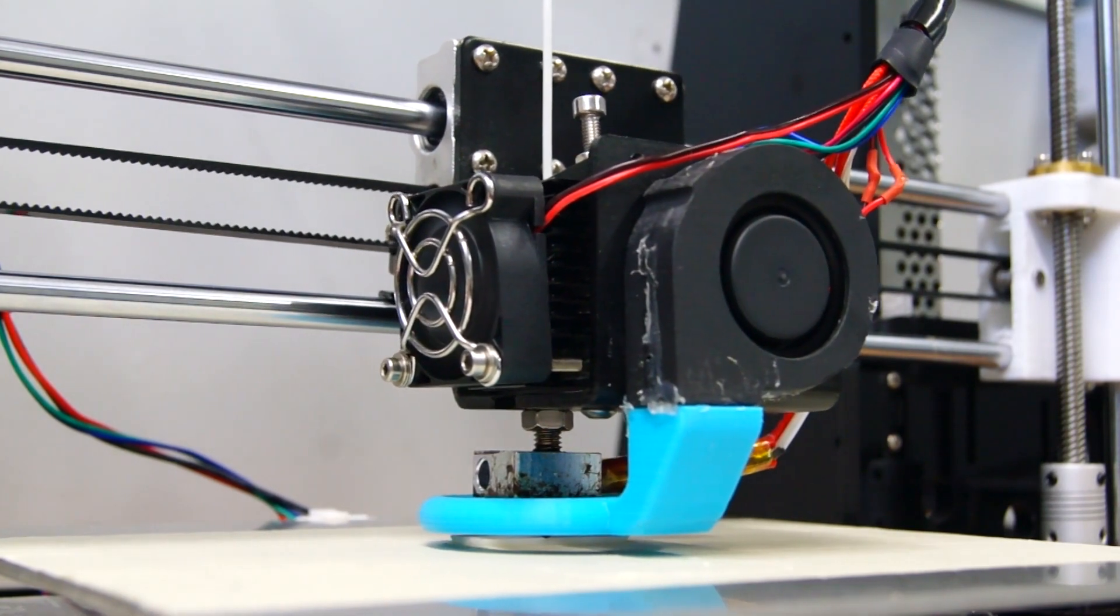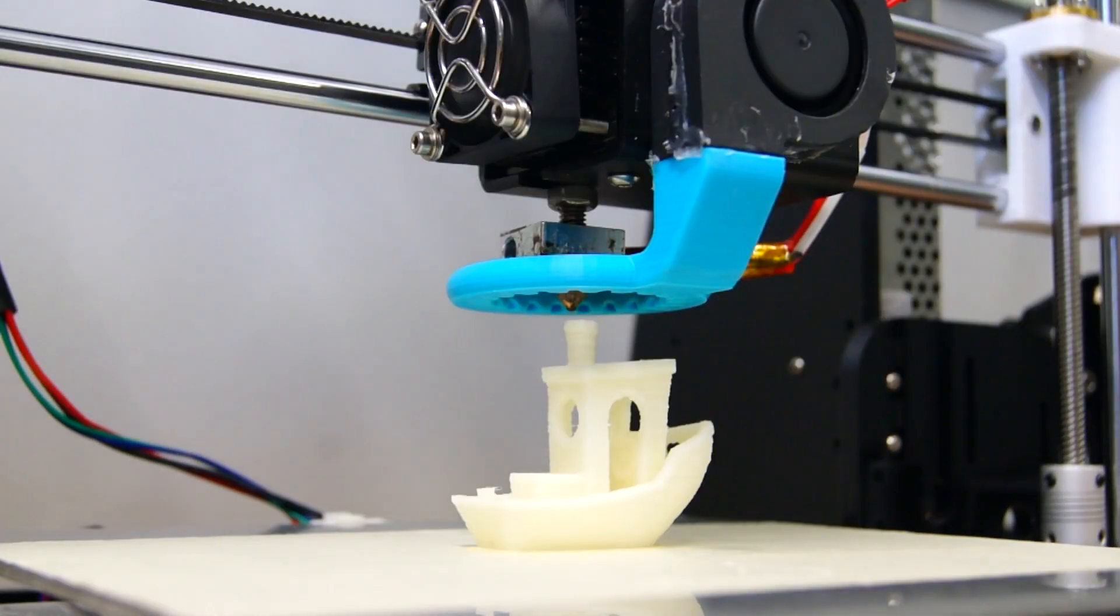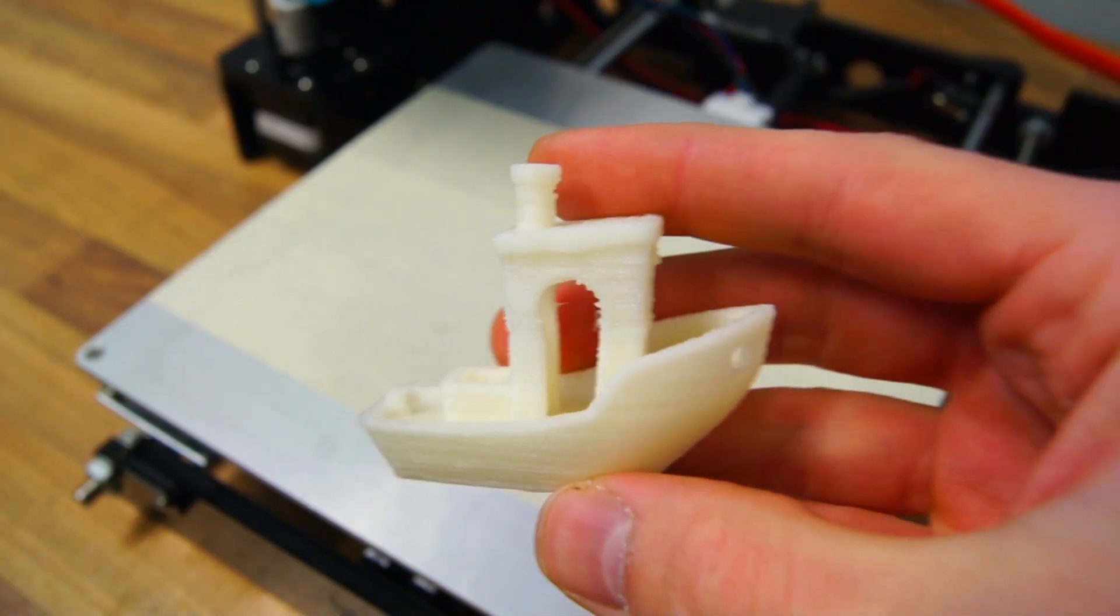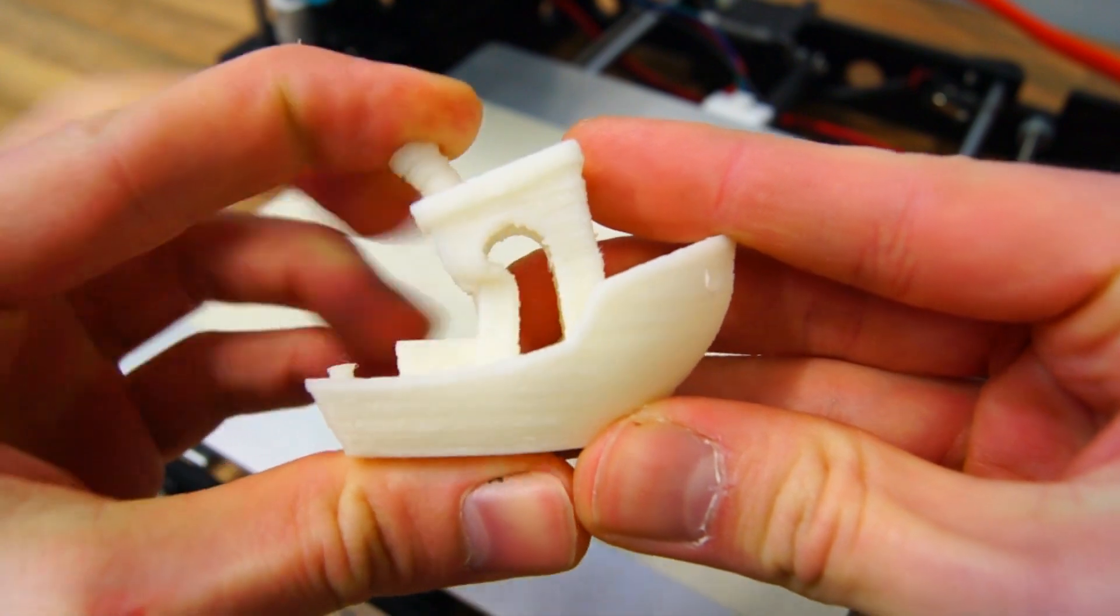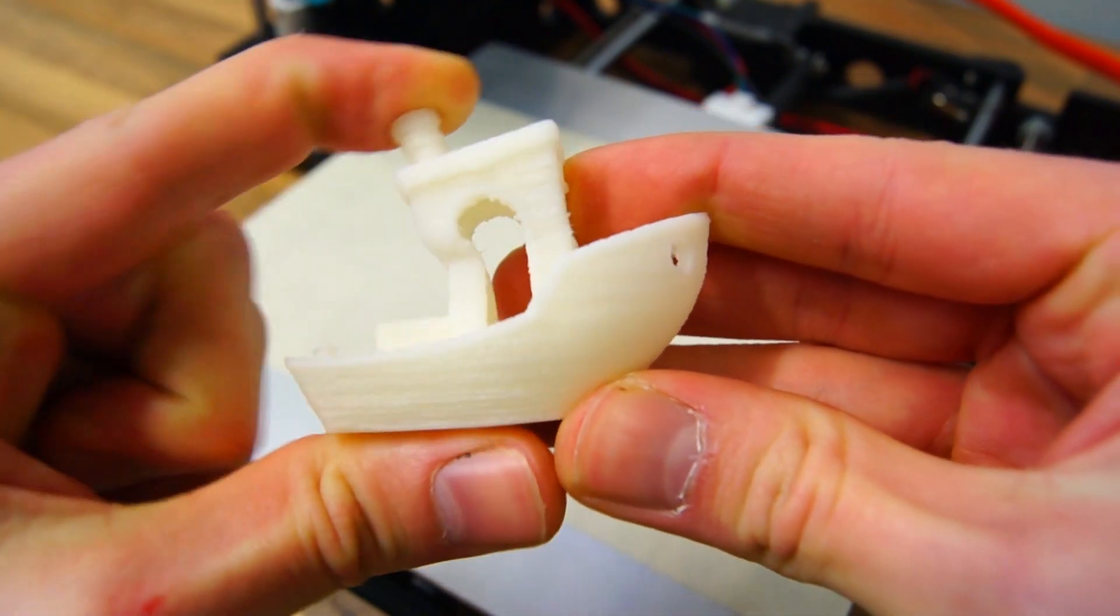Even though it was very slow it did successfully print the Benjabot with no modifications at all. And this is what the flexible filament is capable of. You can bend it but it will always return to its original shape.